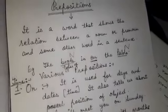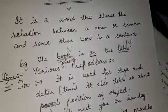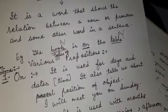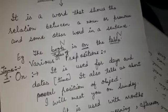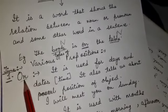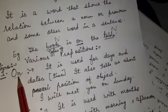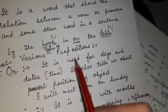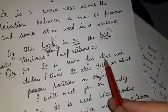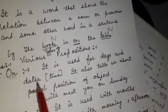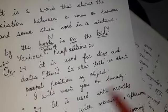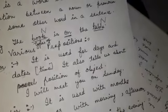Now, there are various types of prepositions. Today I am going to discuss with you prepositions of time. First one is ON. It is used for days and dates. Days and dates ke liye hum ON ka use karte hain. Other objects ki position ke baare mein bhi yeh hume batata hai.